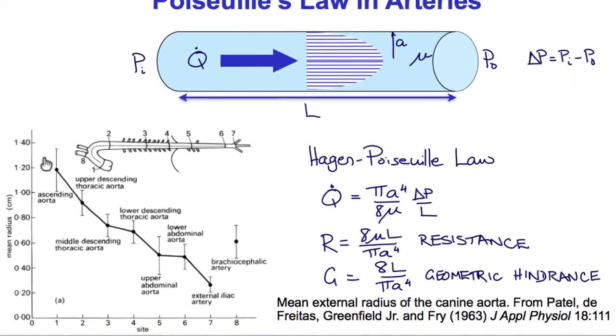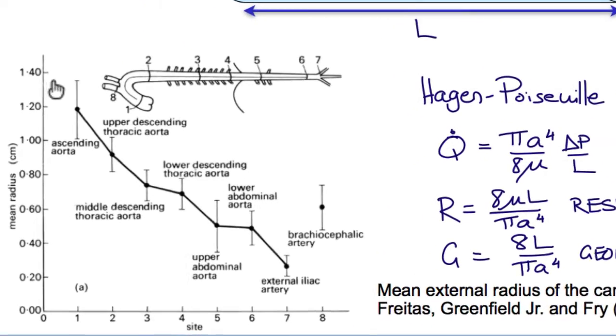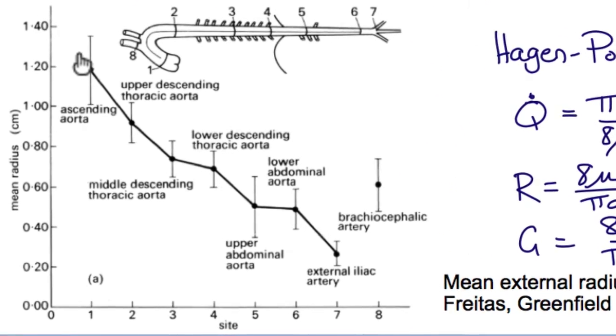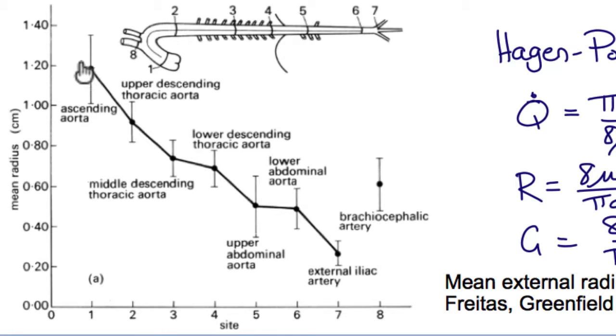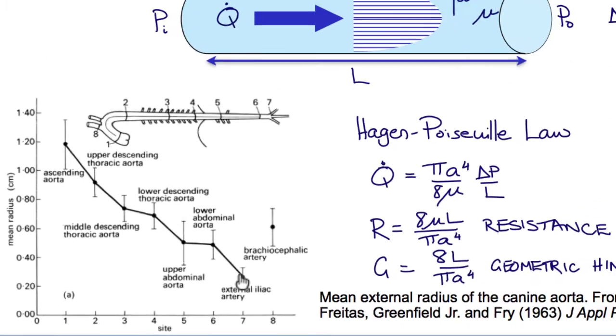Now looking even just along the aorta, you can see that the diameter of the aorta, here shown for a dog, decreases substantially from the top of the aortic arch down to the iliac branch. Each time there's a branching vessel, the aortic diameter decreases. And so as a consequence, going down the aorta, there's a significant increase in flow resistance.